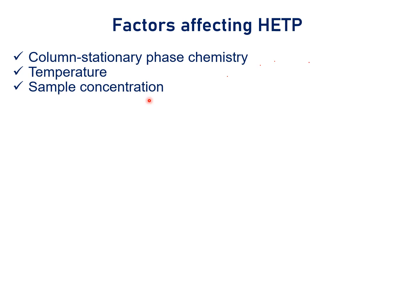Third, sample concentration or injection volume: HETP is directly proportional to the sample concentration or injection volume. Higher the sample concentration, higher the HETP, and lower is the performance of the column. Fourth, column length: HETP is directly proportional to the column length — higher the length of the column, higher the HETP, and lower is the performance of the column.